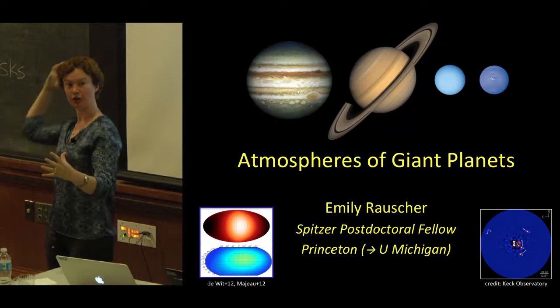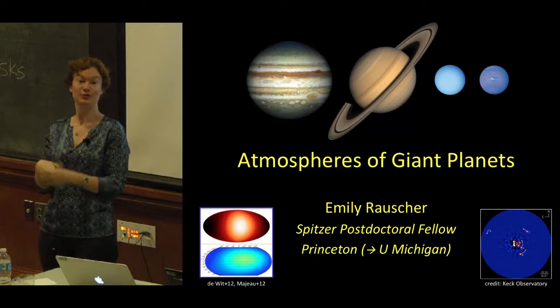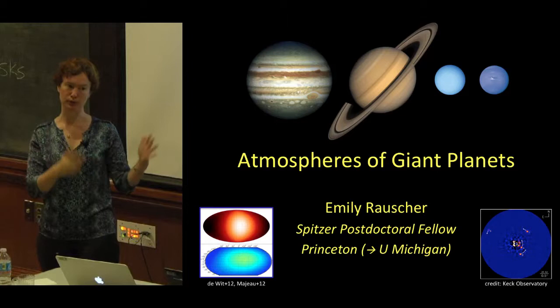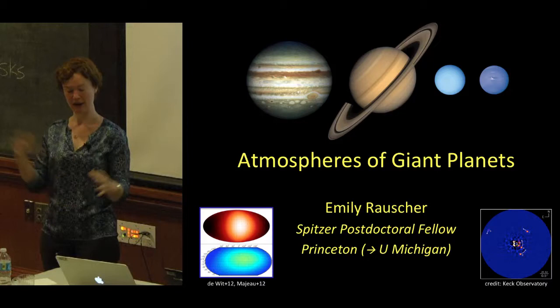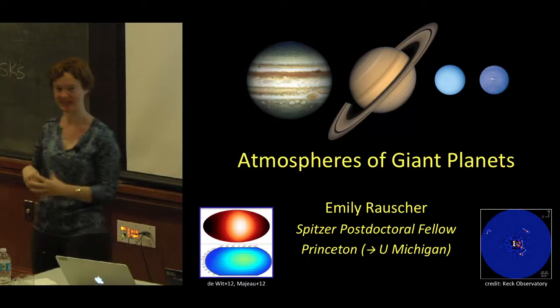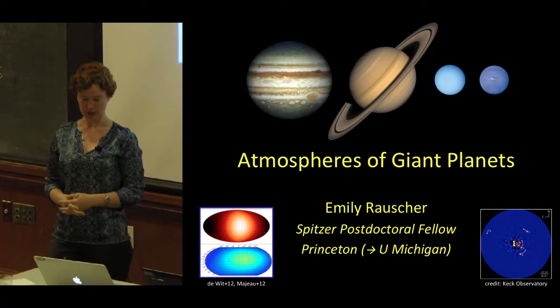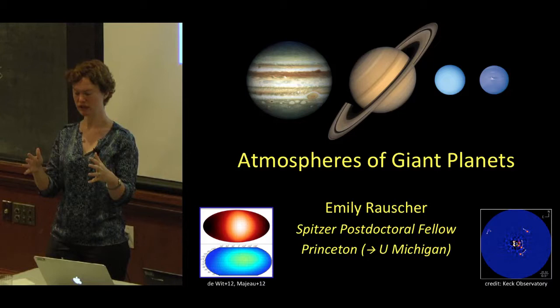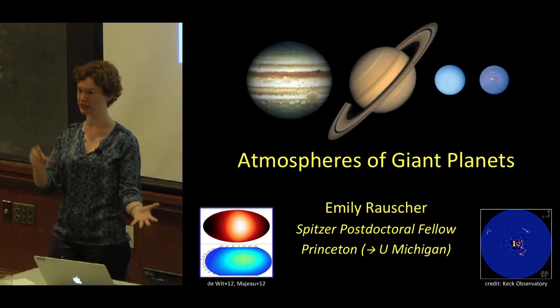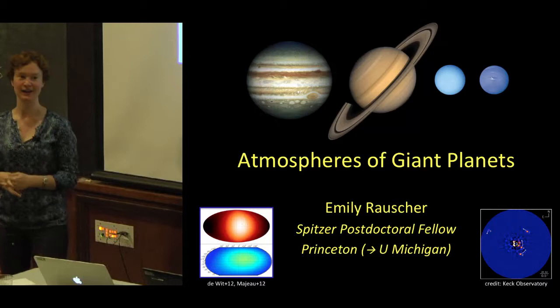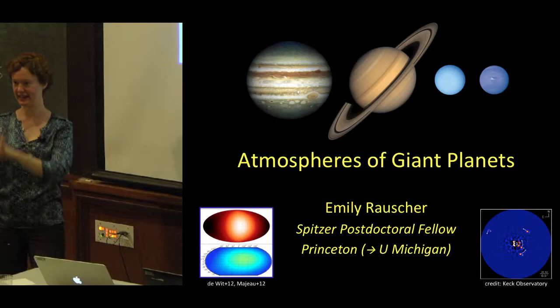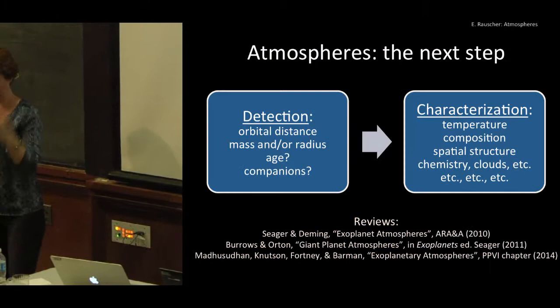Travis gave a wonderful talk yesterday — he lives and breathes directly imaged planets and had some really nice things to say about particular objects, gravity, clouds, and all those kinds of things. That's nicely complementary to my approach. He also pointed out that the atmosphere of a planet is what we're observing and is related to the evolution of the planet — it's the boundary condition. After me, Jonathan is going to give a talk about the evolution of planets, so try to put all these things together in your mind.